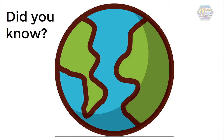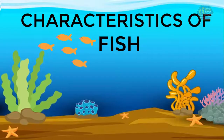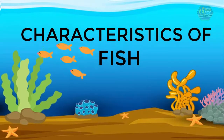Now for a fun fact: did you know that water makes up 71 percent of Earth's surface? That means land is only 29 percent, and most water on Earth is the ocean. Now let's go back — what are some characteristics of fish?